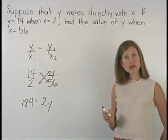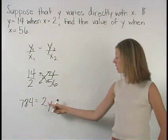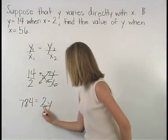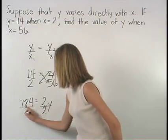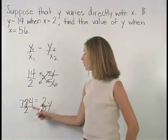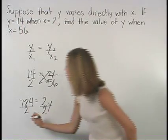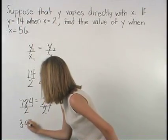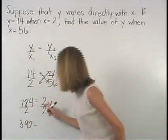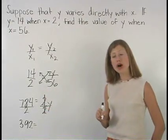Now, we solve for Y by dividing both sides of the equation by 2. 784 divided by 2 is 392, and on the right, the 2's cancel so that we're left with Y. So 392 is equal to Y.